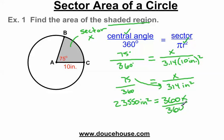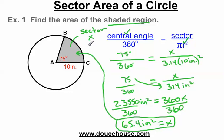My goal is to get that x by itself, so I'm going to divide both sides by 360. I have 65.4 inches squared equals x. Why am I holding on to this inches squared? We're finding area. Area is always going to have some units squared. This is the area of this portion of the circle, the sector. The area of this shaded region is 65.4 inches squared.